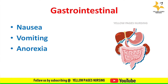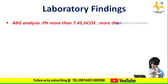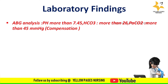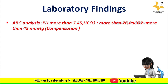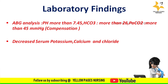Laboratory findings include ABG analysis showing pH more than 7.45, bicarbonate more than 26, and PaCO2 more than 45 mmHg during compensation. There are also decreased levels of serum potassium, calcium, and chloride, with chloride level below normal.